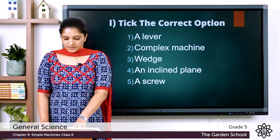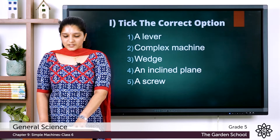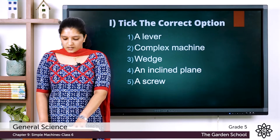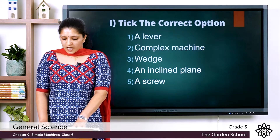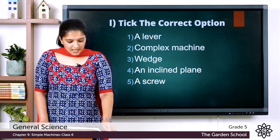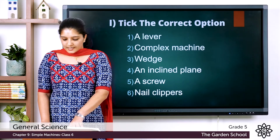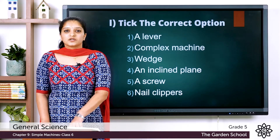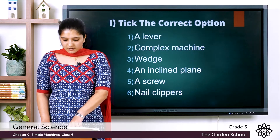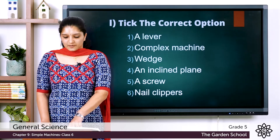The last and final question: which of these is not a complex machine? The options are bicycle, washing machine, car, and nail clippers. The answer is nail clippers. Out of the given options, nail clippers is not a complex machine, while the others — bicycle, washing machine, and car — are examples of a complex machine.